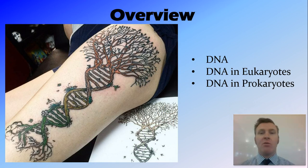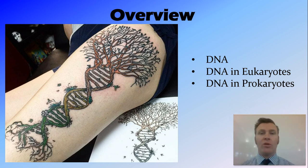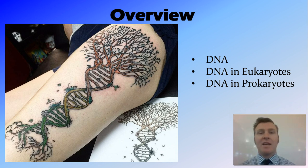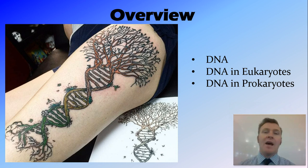In this video we've talked about deoxyribonucleic acid, the genetic code universal to all life. We've talked about where DNA is found in eukaryotes — chromosomal DNA in the nucleus as well as mitochondrial DNA in the mitochondria. And we've talked about DNA in prokaryotes — the chromosomal DNA floating around and the plasmids, these circles of DNA that can be transferred between organisms.